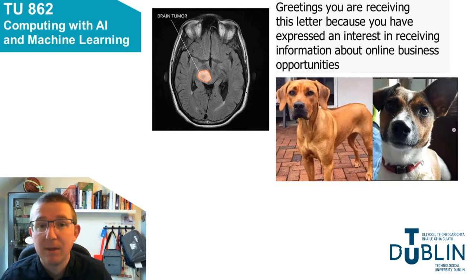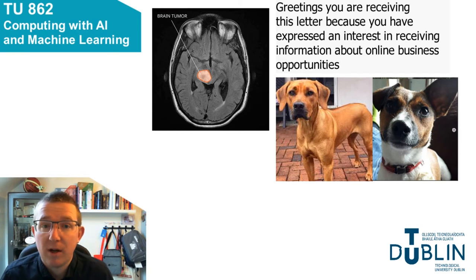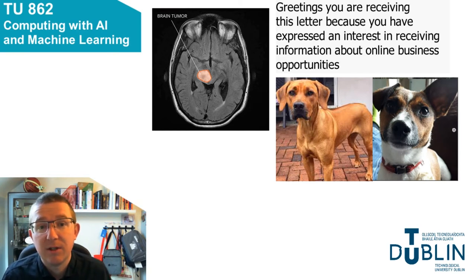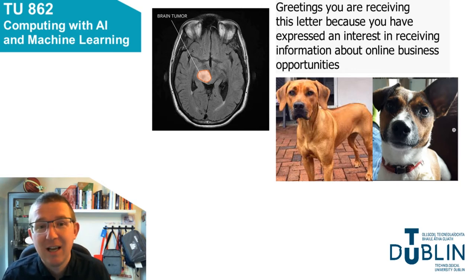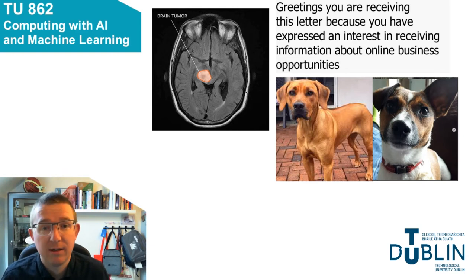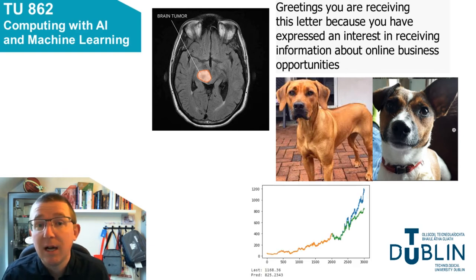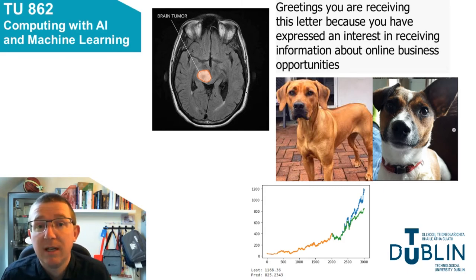As part of this course, we also look at image processing, and we'll use convolutional neural networks to detect features in images. One of the examples is to identify the breed of a dog — on one side you'll see a Rhodesian Ridgeback, and on the other side, my own dog Aria, a Jack Russell. We also do time series prediction, for example trying to predict the stock price over time of a multinational company.